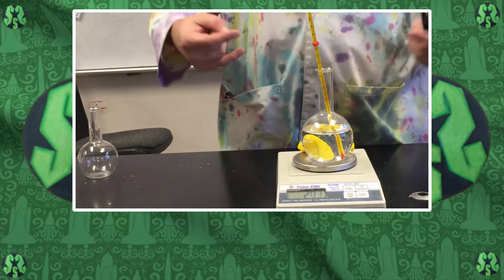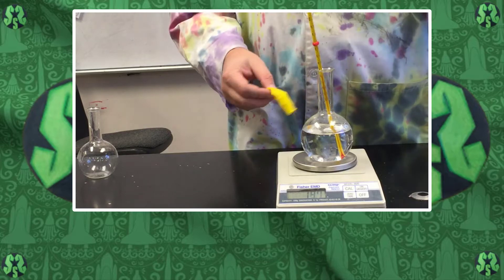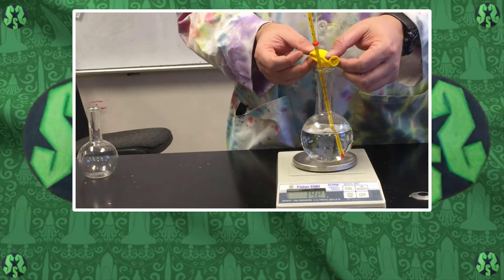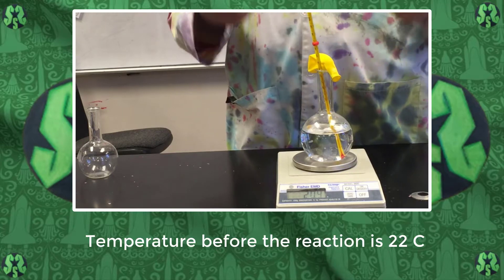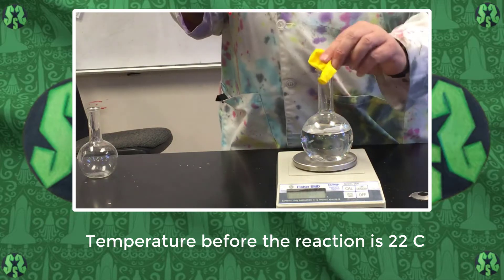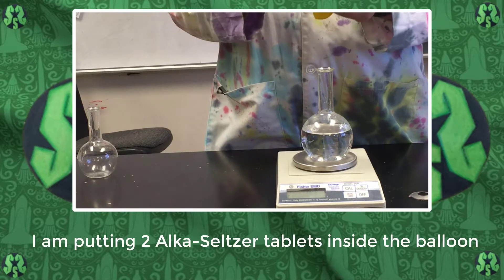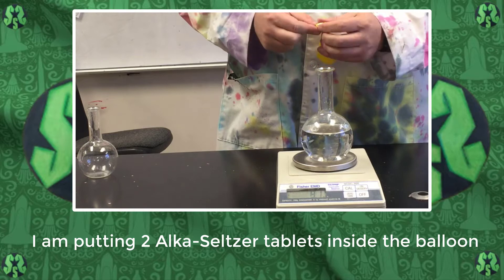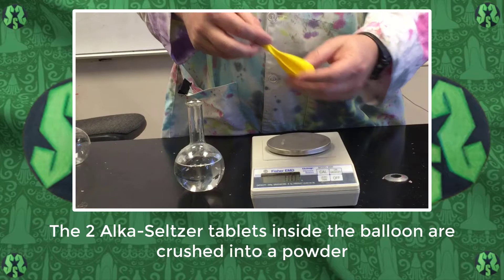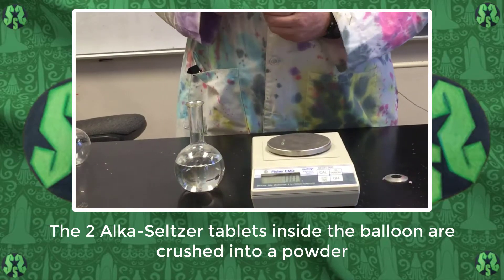Alright, so we have a balloon, a flask, and two Alka-Seltzer generic tablets. I have a thermometer in here - it says it's 22 degrees. I'm gonna take that out though because I don't want the mass of that. I'm gonna take these tablets, put them in the balloon, and try to crunch them up a little bit so they're more powderized.